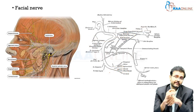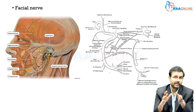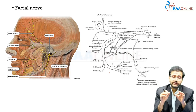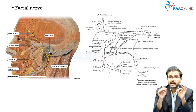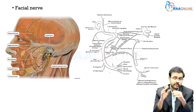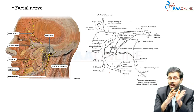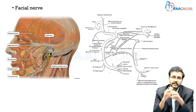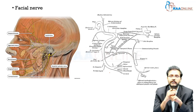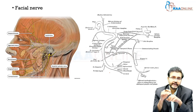It is imperative that we discuss about the facial nerve when discussing the parotid gland, as it is the single most important nerve related to the parotid gland. The facial nerve begins in the pons as a sensory and a motor root. This sensory and motor root enters through the internal acoustic meatus into the petrous part of the temporal bone.